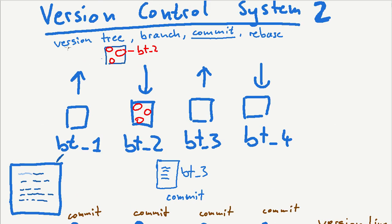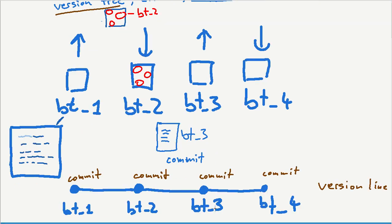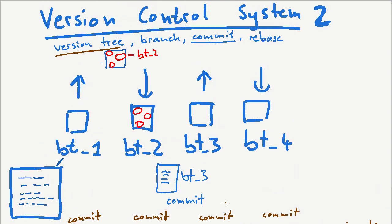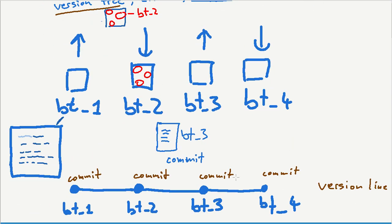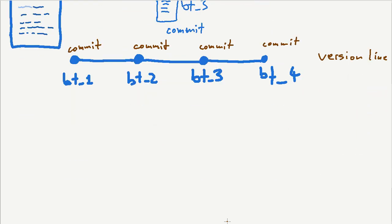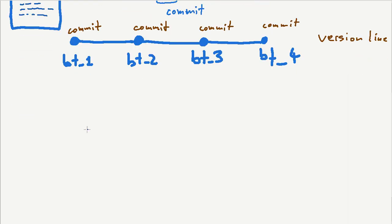Next I'd like to talk about a version tree. What is a version tree? We already have a version line here, but what's a version tree? We're also going to get into branches. Let's move a little bit away from the concrete example because it makes it much easier to explain.